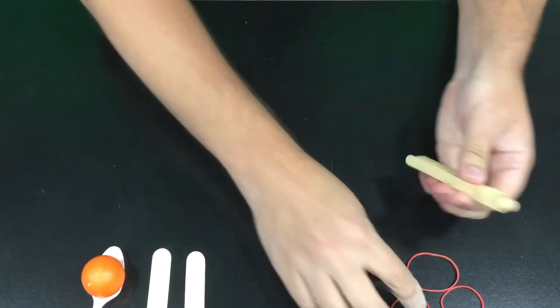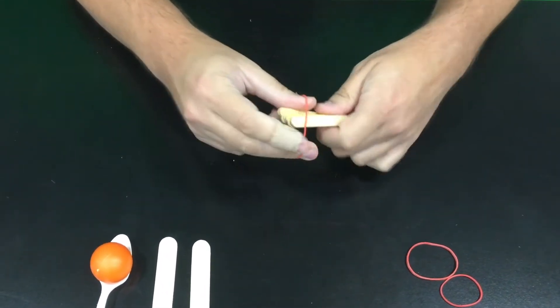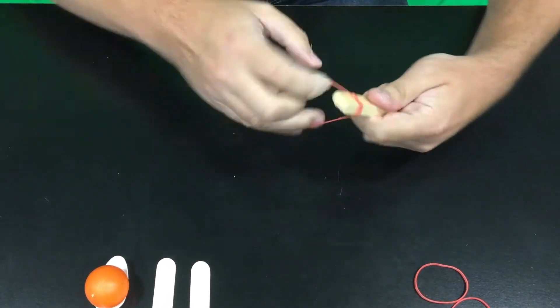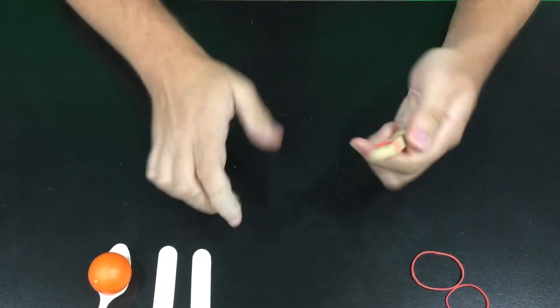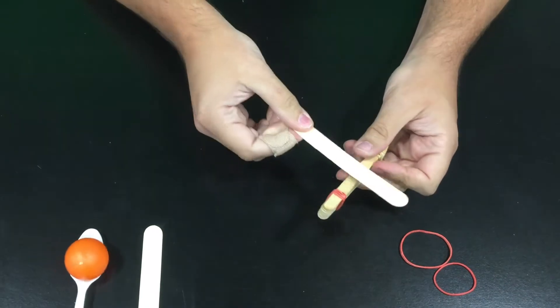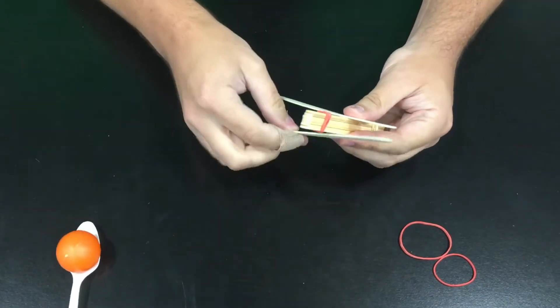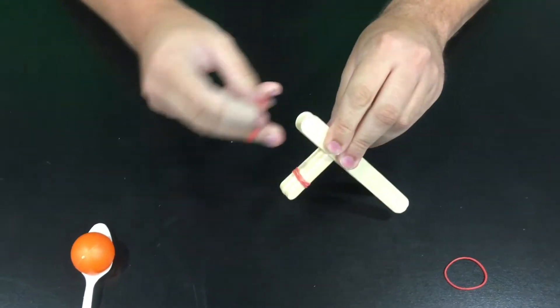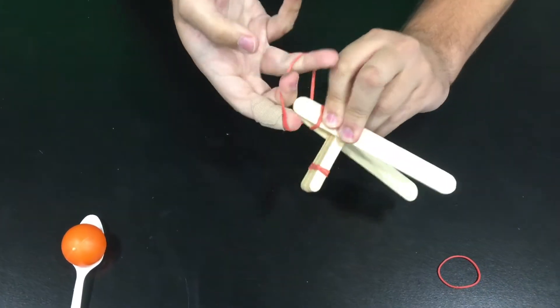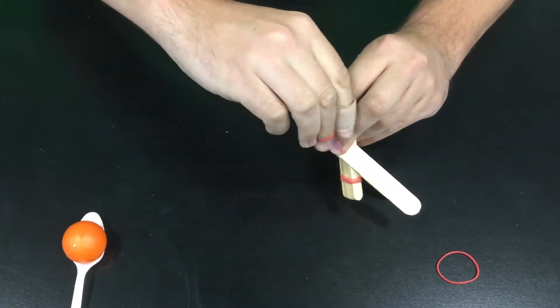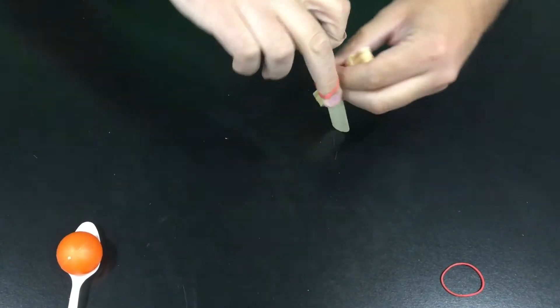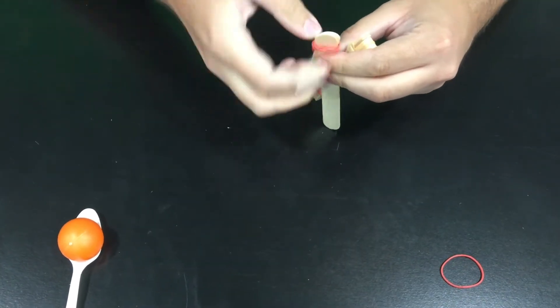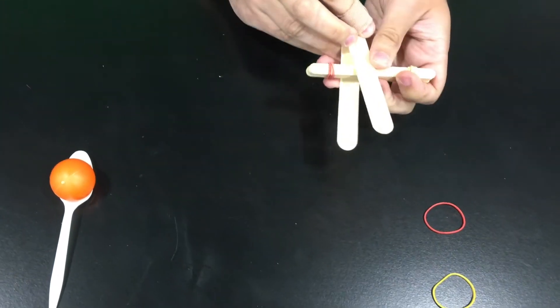Your next step is to take the large tongue depressors or popsicle sticks, whatever you want to call them. You're going to attach another rubber band to the end with the craft sticks in between. It's a little tricky, you have to hold them tight. Don't get frustrated.